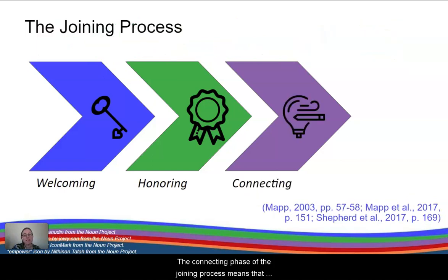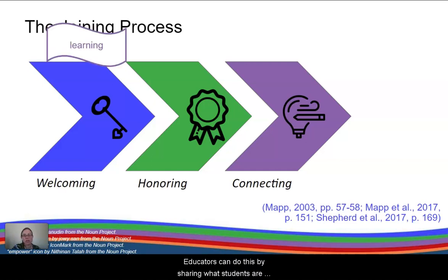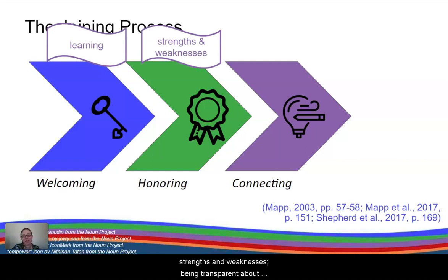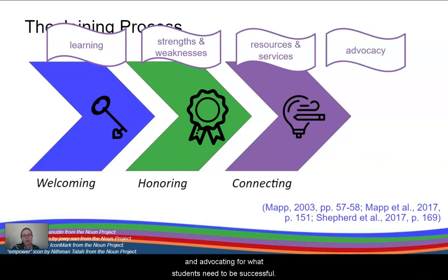The connecting phase of the joining process means that schools connect with families through a clear focus on the children's learning and educational achievement. Educators can do this by sharing what students are learning, knowing their students' strengths and weaknesses, being transparent about available resources and services, and advocating for what students need to be successful.